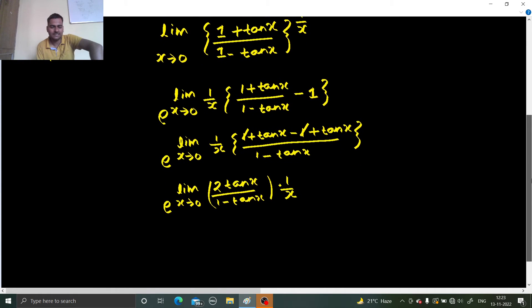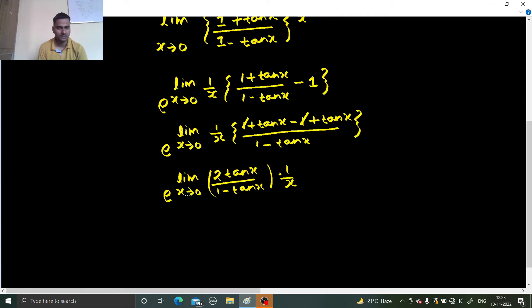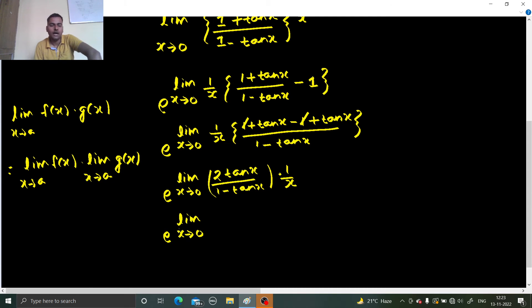Now we can write this product as product of 2 limits, because we know that limit x tending to a, f(x) multiplied by g(x) can be written as limit x tending to a, f(x) times limit x tending to a, g(x). Limit of a product can be written as product of 2 limits. E power limit x tending to 0, I am writing 2 tan x divided by x into limit x tending to a, 1 divided by 1 minus tan x.